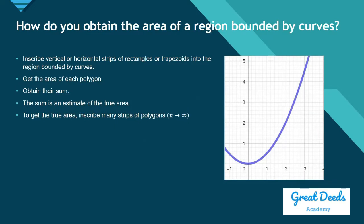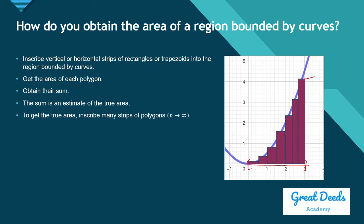This is how we did it last time. We were interested in the area of the region bounded above by a parabola, bounded below by the horizontal axis from 0 to 3. We drew rectangles and laid them down, then obtained the sum of the areas of these rectangles. That sum is our estimate for the area of the plane region. The area is approximately equal to the summation of A sub i, where A sub i is the area of a rectangle and i ranges from 1 to n. If the limit exists, that is the true area of the region bounded by those curves.